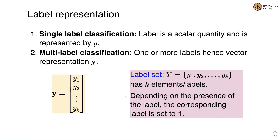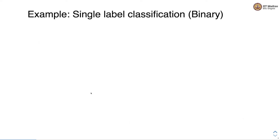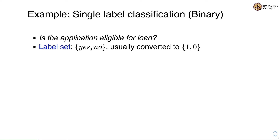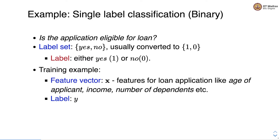For binary single-label classification, one example is whether the applicant is eligible for a loan. The label set is yes or no, usually converted to 1 or 0 respectively. Each loan application gets exactly one of the two labels. The training example has a feature vector where features for the loan application could be age of the applicant, income, number of dependents, etc., and the label y is either yes or no.